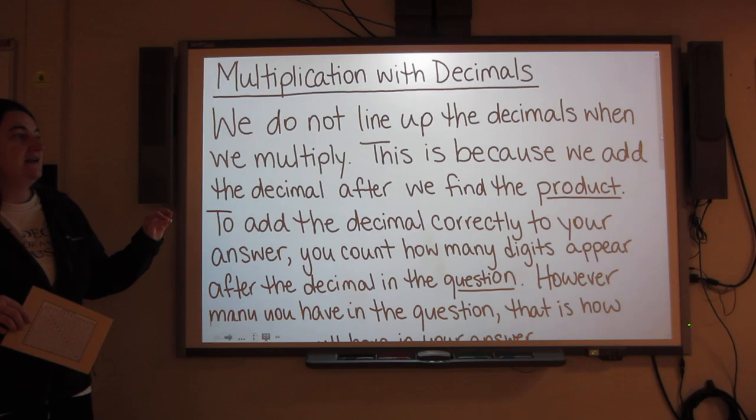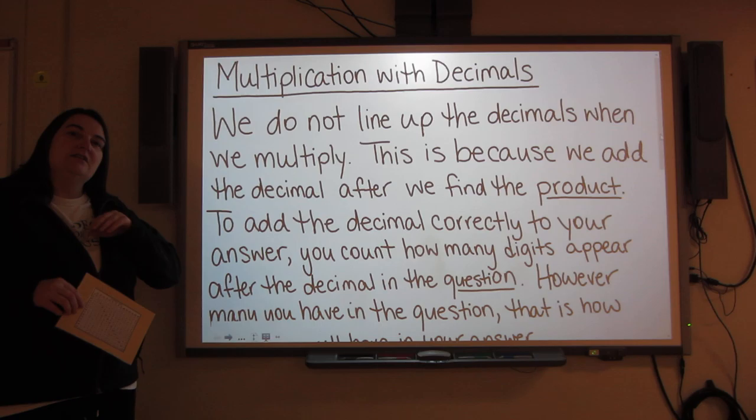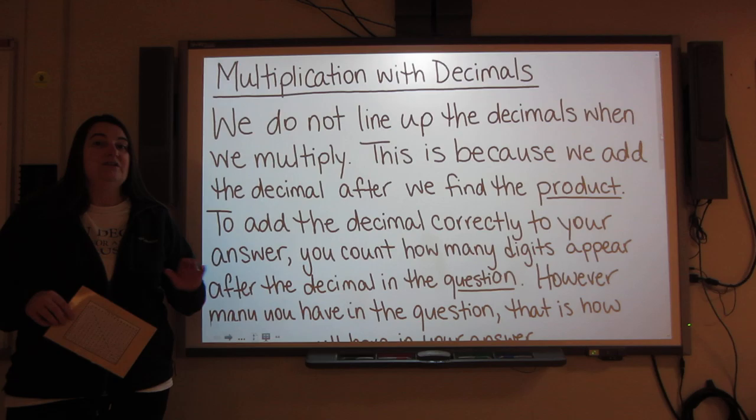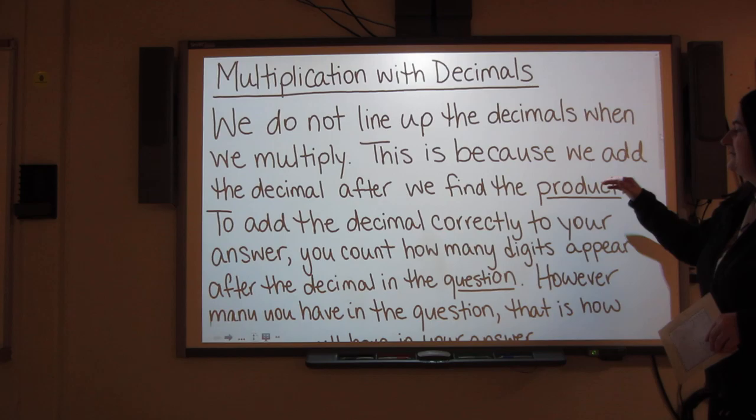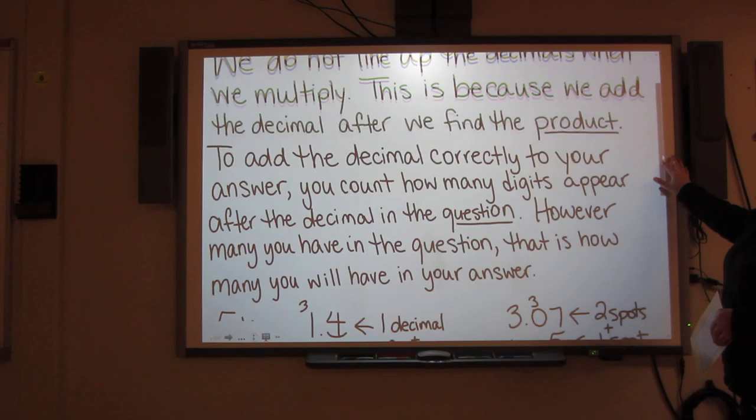Like I said in the last video, we do not line up decimals when we multiply. This is because you do not add the decimals until after you've got your final answer, until you've got the product. You can almost ignore the decimals completely and they don't matter until you've done all the calculations first and then you can pay attention to the decimals.